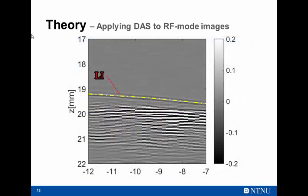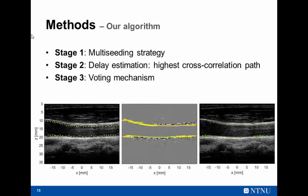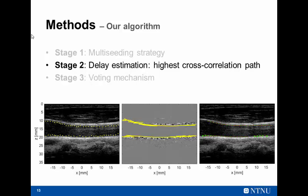But of course, we need to calculate those delays somehow. So I present an algorithm to do that. It's probably not the best one, because I don't have a trajectory in dealing with image processing or segmentation techniques, but it will do the trick. So I can show you that the idea of combining coherently different RF scanlines can work. It consists of three stages. The first one is a multi-seeding strategy, then a delay estimation algorithm based on calculation of the highest cross-correlation path, and then a voting mechanism to try to get the most probable interface for the lumen-intima.